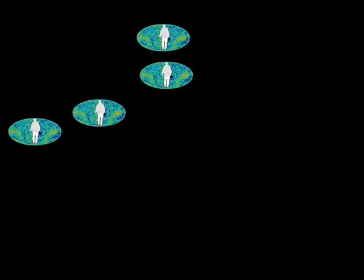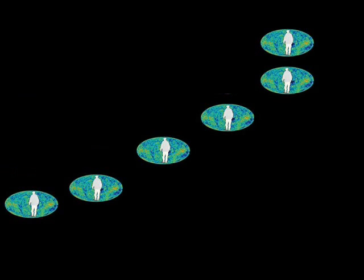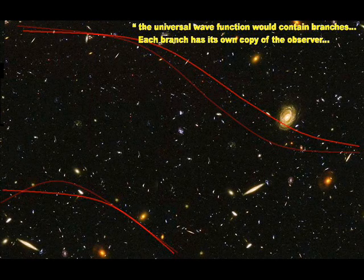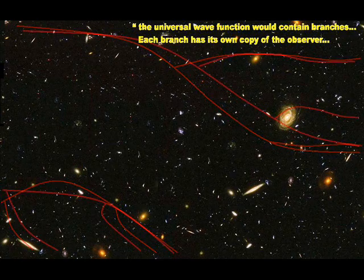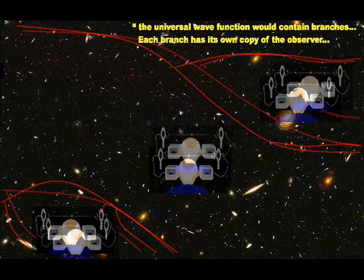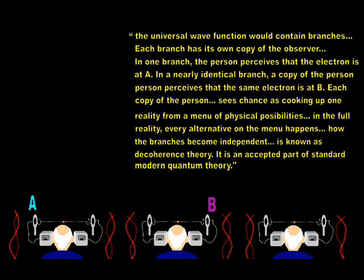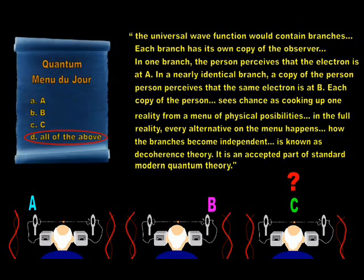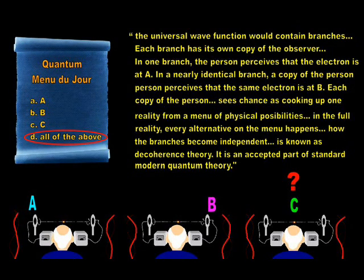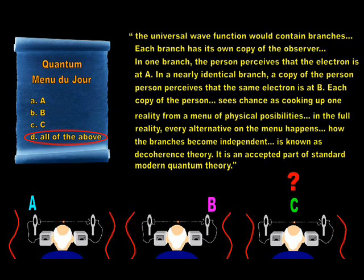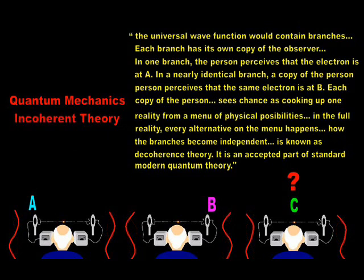Hugh Everett proposed instead that every human action forks out indefinitely, like a chain reaction into countless universes. Science writer Peter Byrne summarizes Everett's breathtaking scientific discovery. Universal wave function would contain branches. Each branch has own copy of observer. In one branch, person perceives electron is at A. In nearly identical branch, copy of person perceives same electron is at B. Each copy of person sees chance as cooking up one reality from menu of physical possibilities. In full reality, every alternative on menu happens. How branches become independent is known as decoherence theory. It is accepted part of standard modern quantum theory.